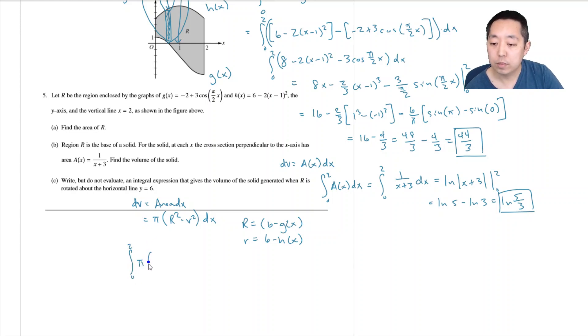Pi times 6 minus g of x squared minus 6 minus h of x squared dx. And I am done.